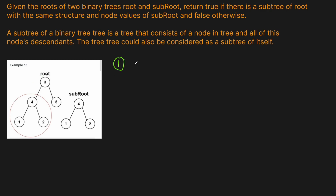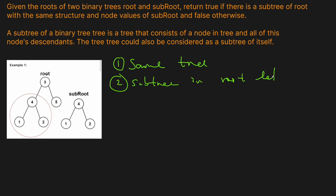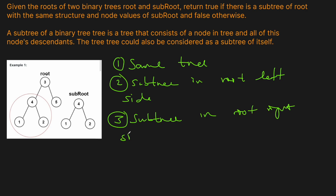This gives us three cases to check. The first case is that we have the same tree — all values at all positions have to be the same. The second case is that the subtree exists in the left side of root. The third case is that the subtree exists in the right side of root.